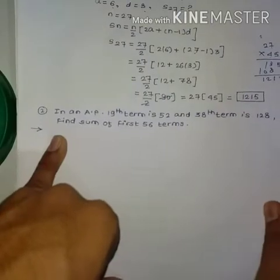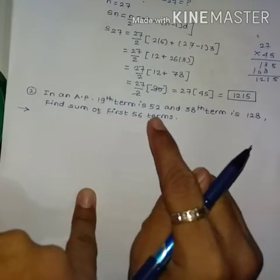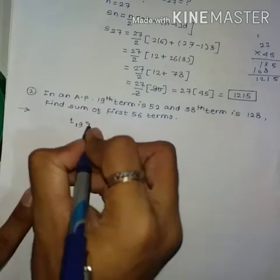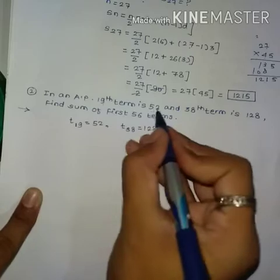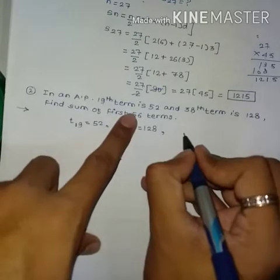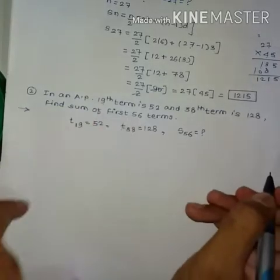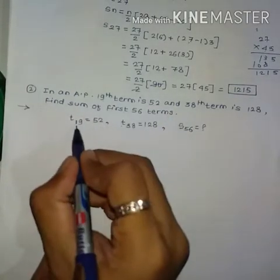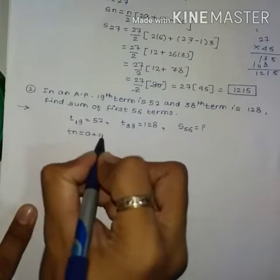Next question: In an AP, the 19th term is 52 and the 38th term is 128. Find the sum of 56 terms, i.e., find S56. Since specific terms are given, we use the tn formula: tn = a + (n−1)d.